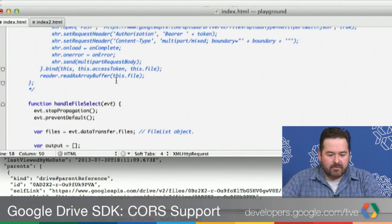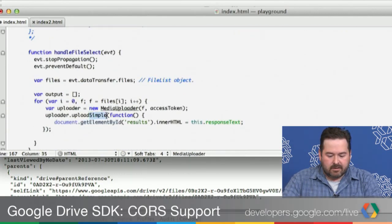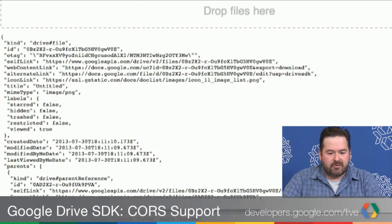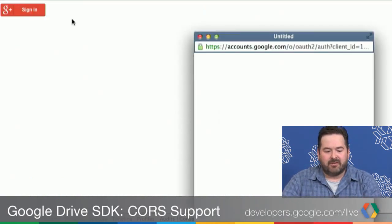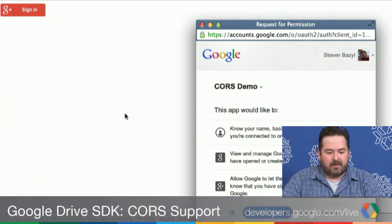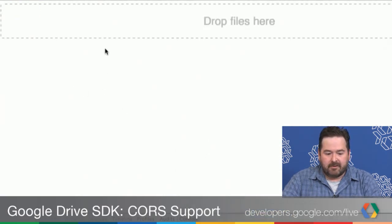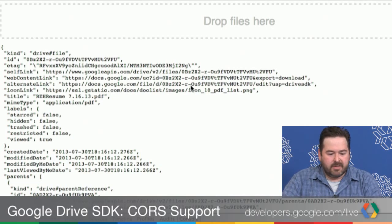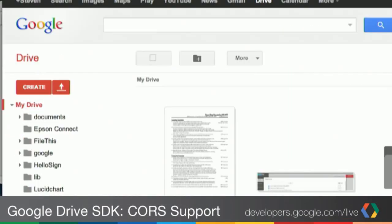Let me scroll over and demo the multipart upload. I'll reload this page — I did set my approval prompt to force, which is why this button keeps showing up, but normally you'd just get signed in automatically. This time let's drag a PDF over. Again, it works. But you notice this time we actually have the correct title — you can see it in the metadata returned. And if we switch over to Drive, we see we have the correct title there as well.